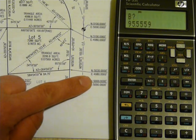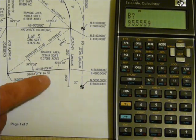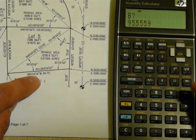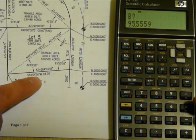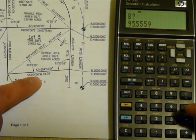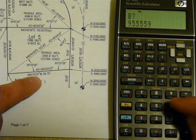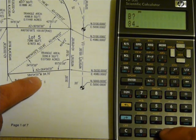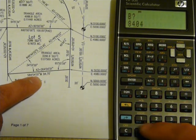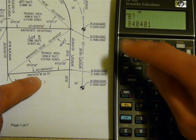Press RS to continue. Bearing to the intersection. And these are all in degree, minute, seconds. 84.0401.